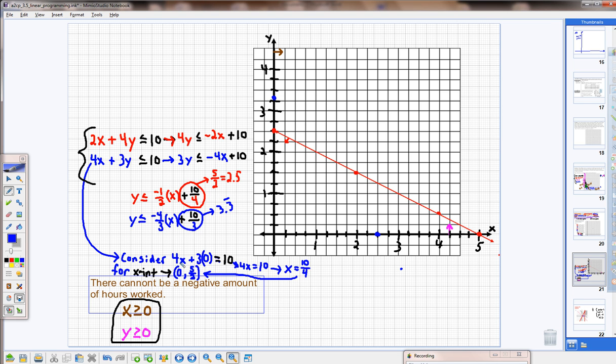So I might want to get an exact point for my x-intercept. In order to do that, consider the equation 4x plus 3y, or 3 times 0, equals 10. I plug a zero in for y because any value on this axis has a y value of 0. When I plug a zero in for y, I solve the equation for x equals 10. x equals 10 fourths, same as five halves, so my x-intercept is two and a half.